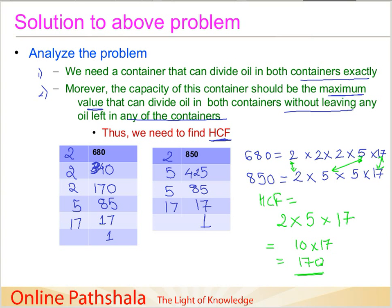So we need a container of 170 liters. A 170-liter container will divide both 680 and 850 into exact parts without leaving anything remaining. To reinforce: HCF is the highest number that is a factor of both numbers — meaning it can divide them exactly. That is the concept of HCF as applied to this real-life problem.